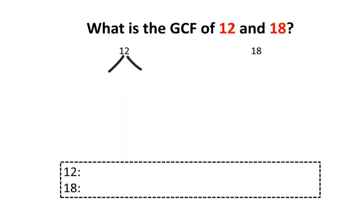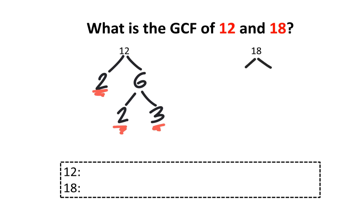We're going to start by breaking up 12. Think of two numbers that multiply to give you 12 — I can think of 2 and 6. 2 is a prime number, therefore we're going to stop there. Next, we want to break up 6. Think of two numbers that multiply to give you 6 — I can think of 2 and 3. Both 2 and 3 are prime numbers, therefore we're going to stop there as well. Now I'm going to break up 18. Think of two numbers that multiply to give you 18 — I can think of 2 and 9. 2 is a prime number, so I'm going to stop there. Think of two numbers that multiply to give you 9 — I can think of 3 times 3. 3 is a prime number, therefore we're going to stop there as well.